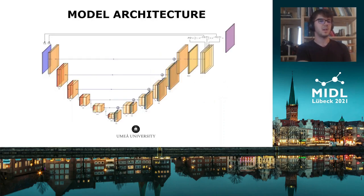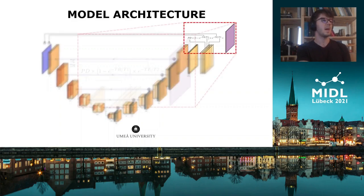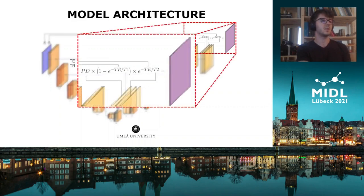We achieved this by simply adding a final layer to a U-Net model. Instead of returning a single channel layer, the base network returns three channels, and we apply a custom layer on these three channels that mimics the signal equation of the sequence. This way we can control what contrast to generate by inputting the echo and the repetition times to the generator explicitly, in a physically meaningful way.